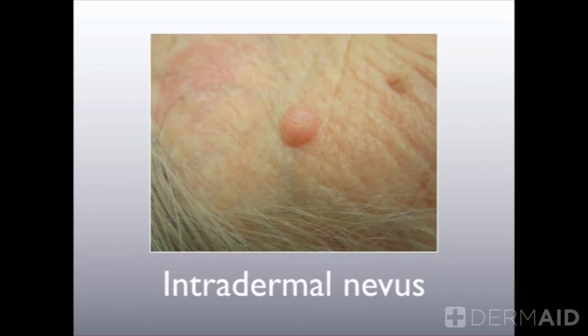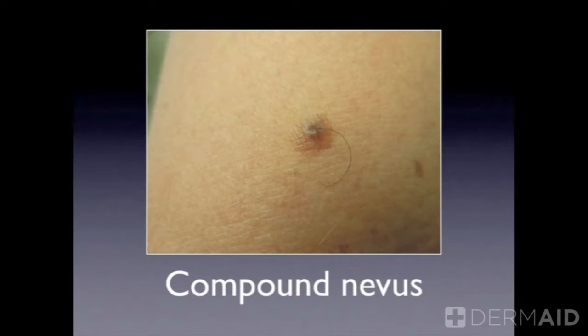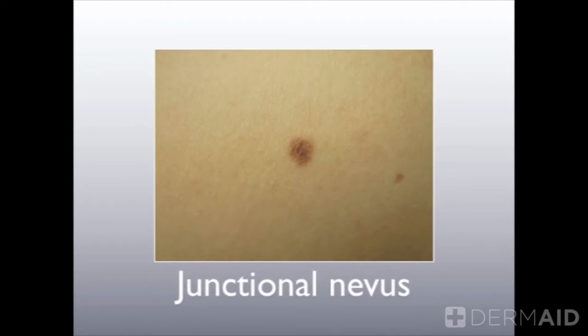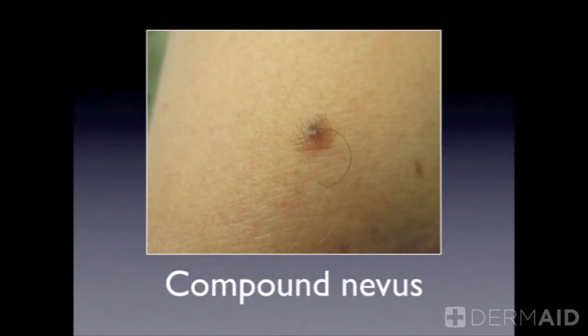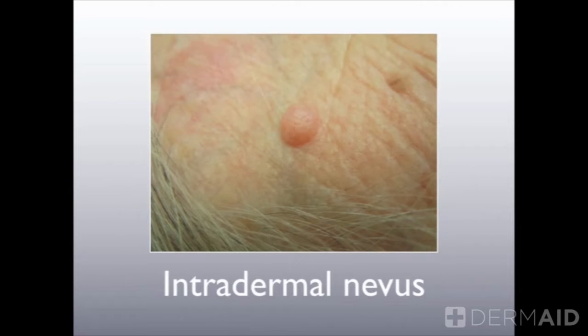If you notice, all of these moles are round to oval and fairly uniform in color. This is what we want to see in a typical melanocytic nevus.